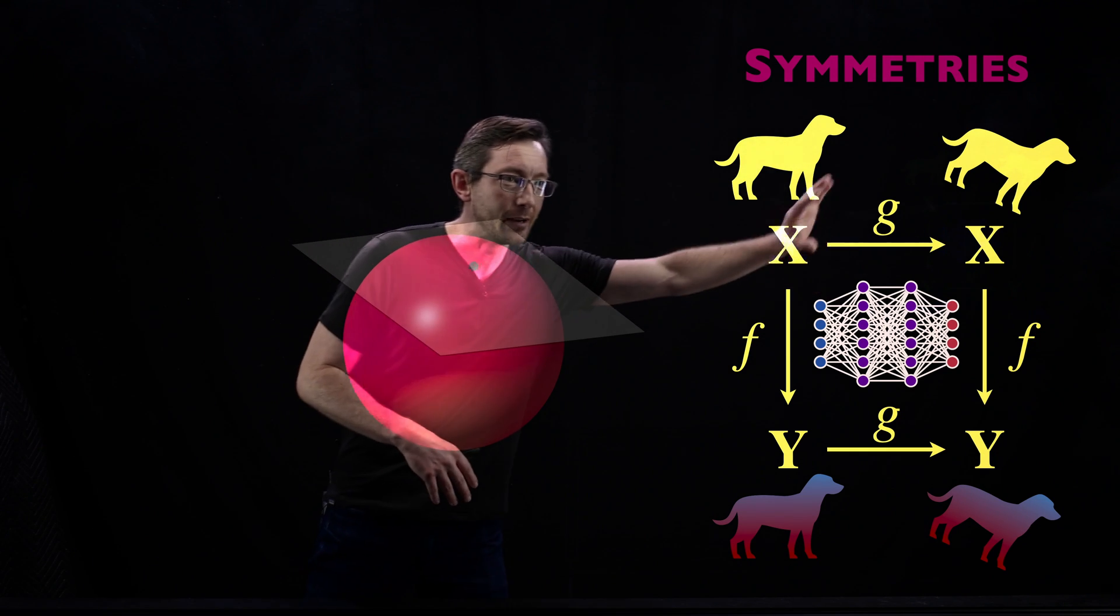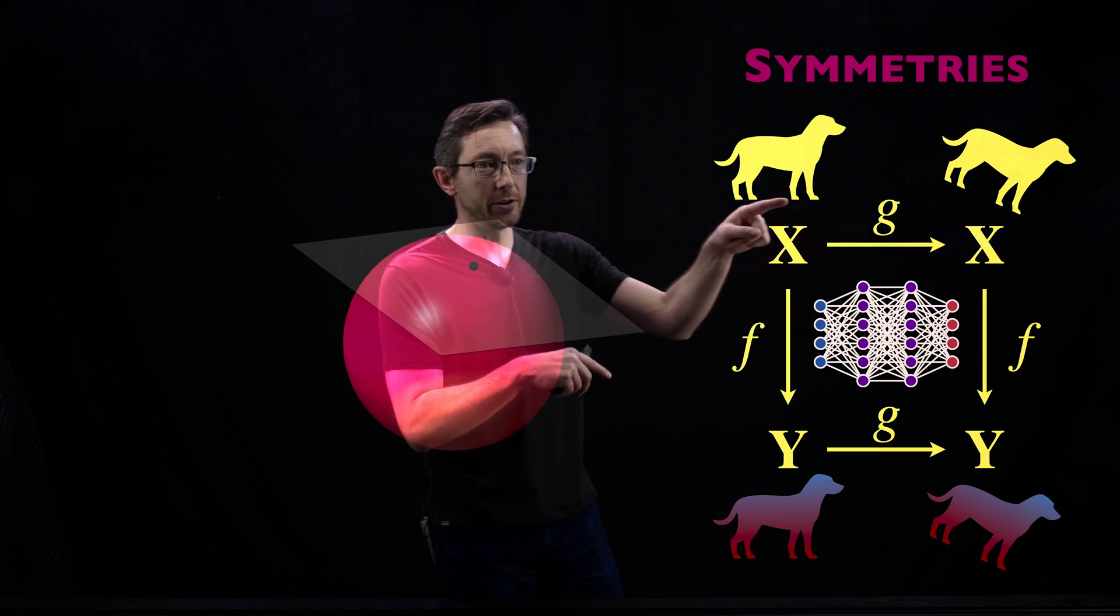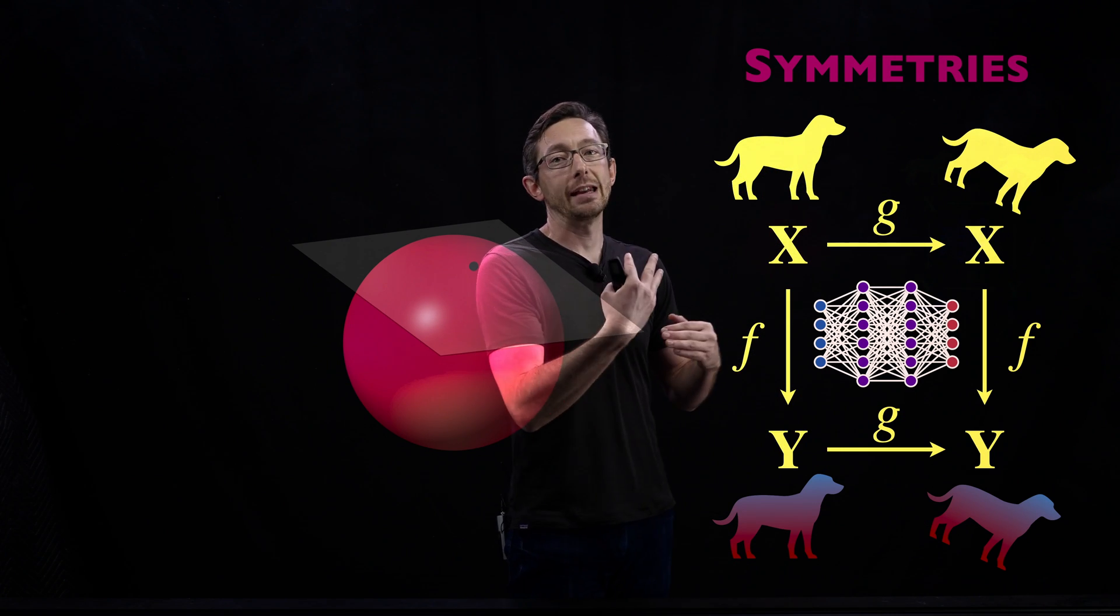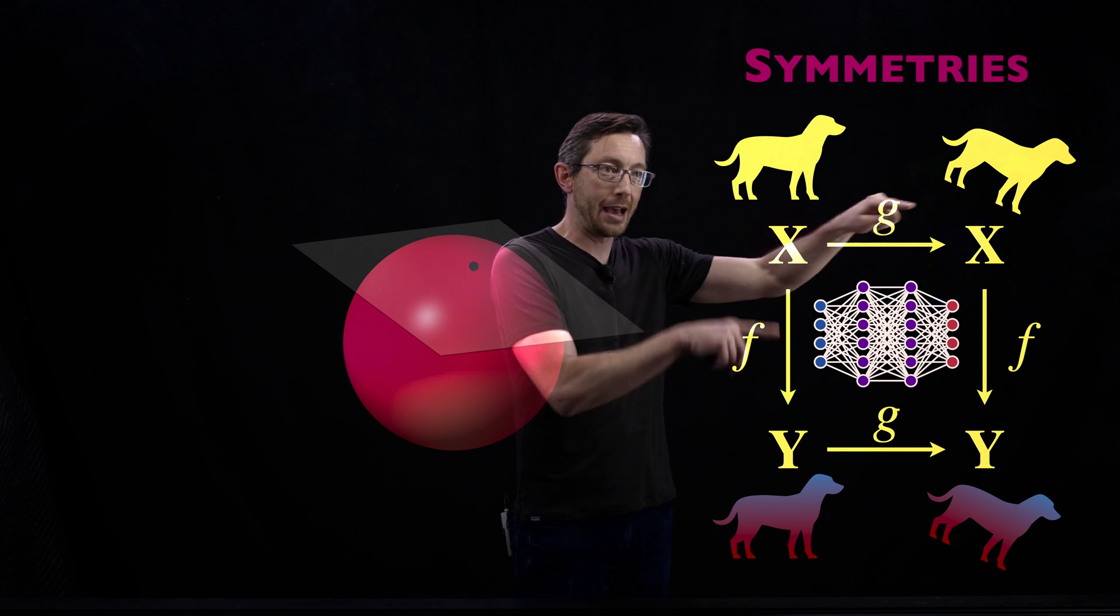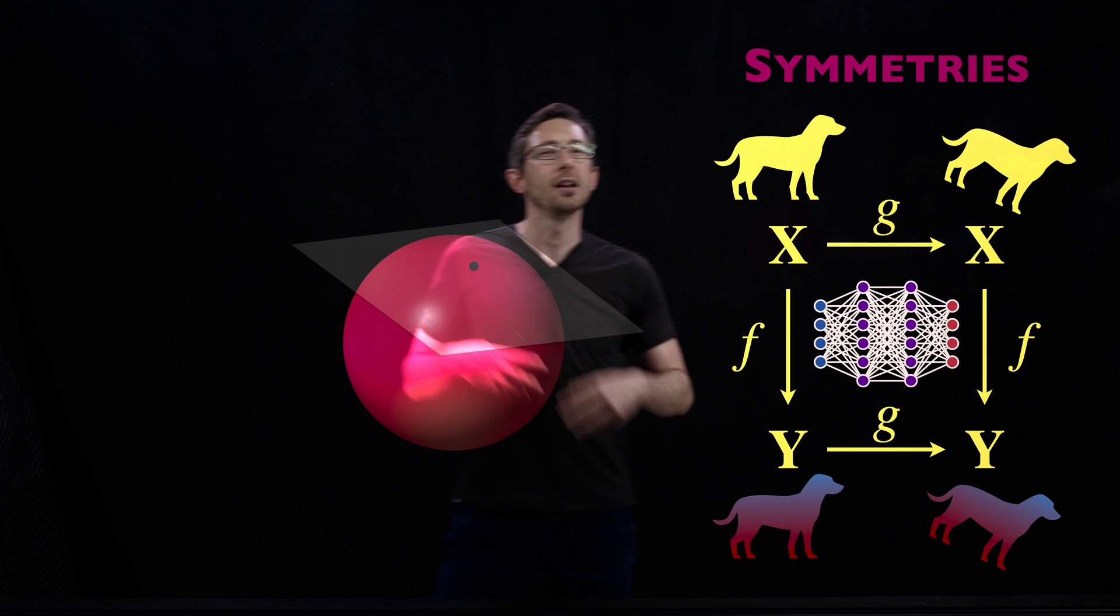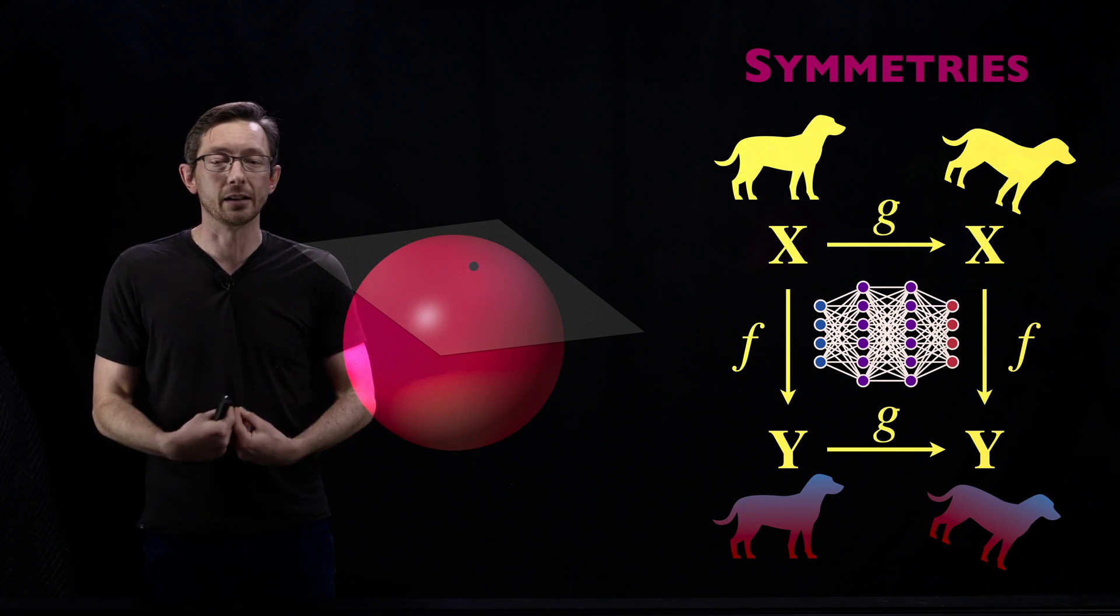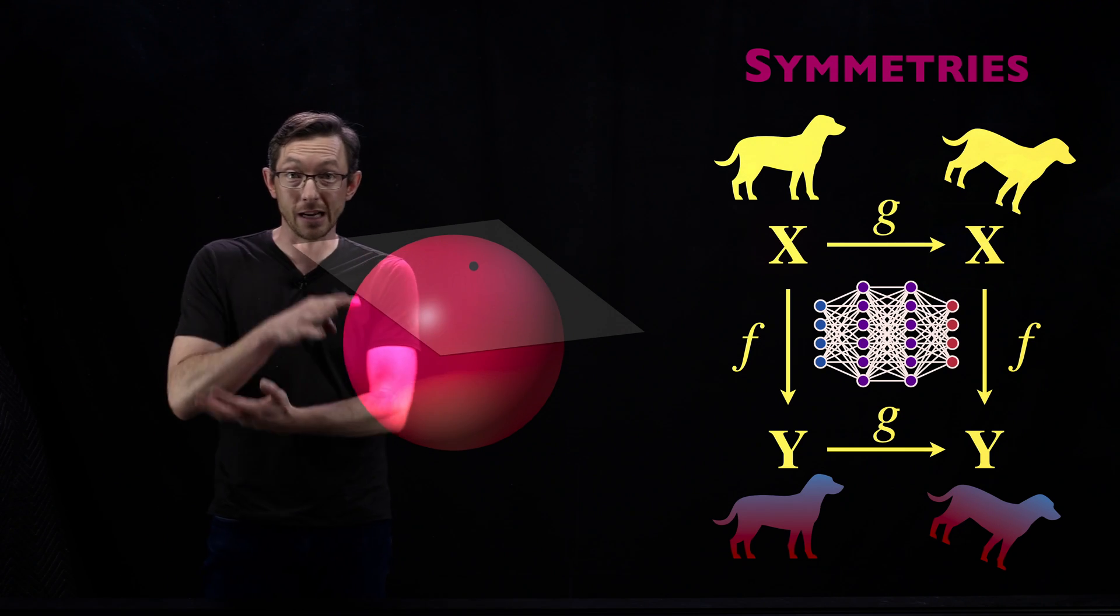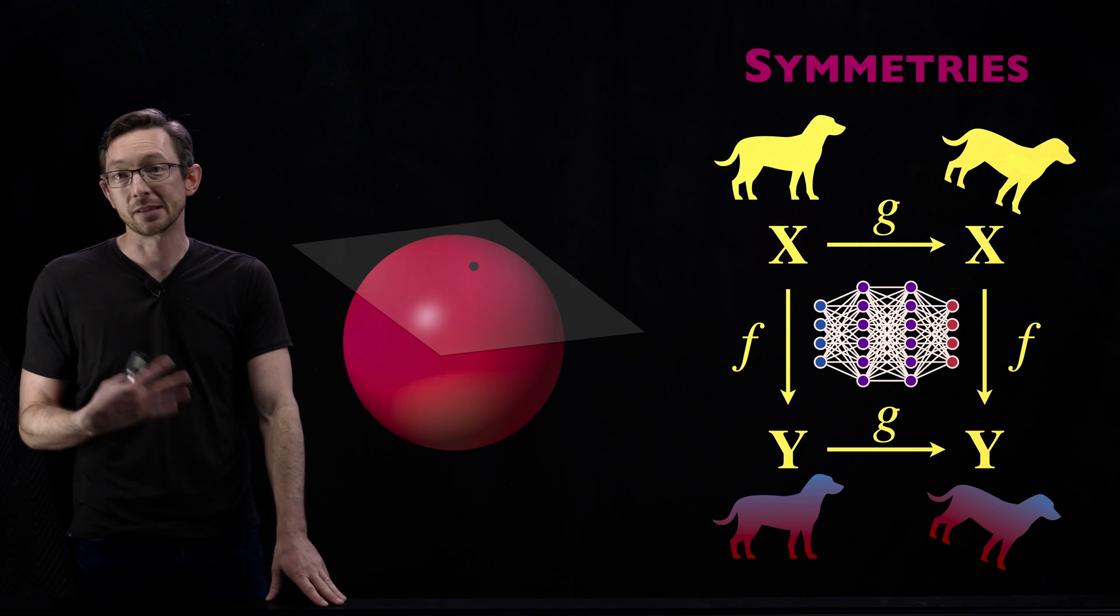This is just a diagram that captures this notion called equivariance. If I have a neural network f that maps some data x to some data y, then that network is equivariant with respect to some symmetry group g if it doesn't matter if you apply g first and then f or if you apply f first and then g. It's a very mathematical concept but it also has super physical meaning like translational invariants.